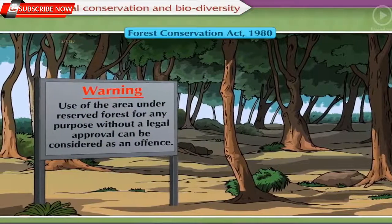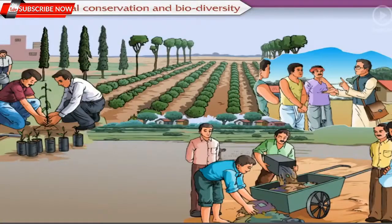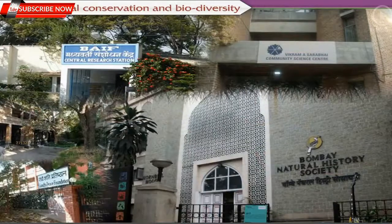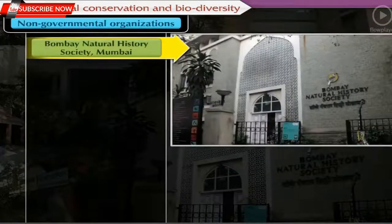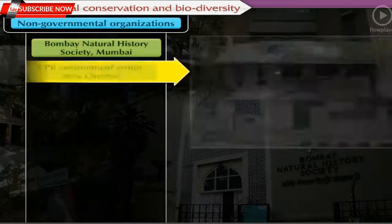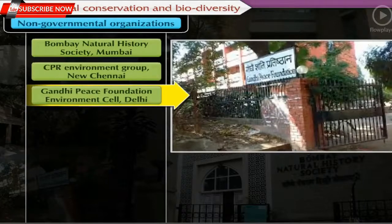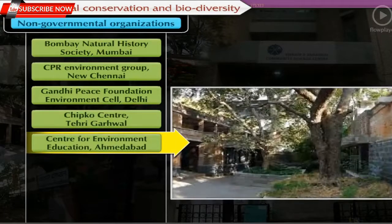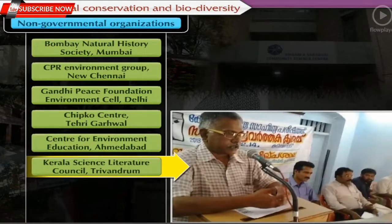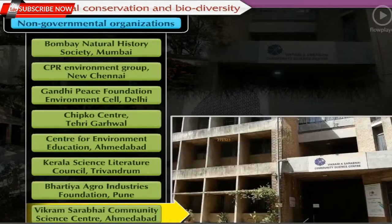Several organizations are working for environmental protection and conservation at national and international levels. Some non-governmental organizations include: Bombay Natural History Society, Mumbai; CPR Environment Group, Chennai; Gandhi Peace Foundation Environmental Cell, Delhi; Chipco Center, Teheri Garhwal; Center for Environment Education, Ahmedabad; Kerala Science Literature Council, Trivandrum; Bharati Agro Industries Foundation, Pune; and Vikram Sarabhai Community Science Center, Ahmedabad.